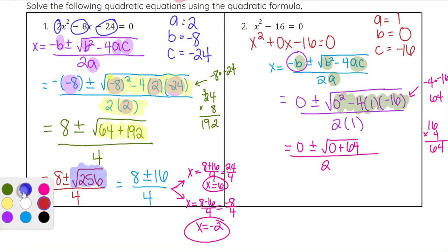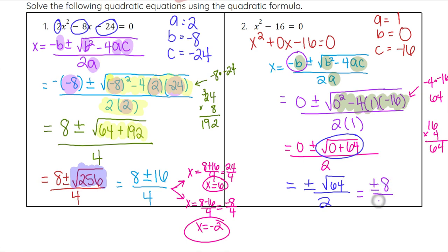Add 0 and 64 together to get 64 under the root. Since there's a 0 before the plus or minus, we can just write plus or minus the square root of 64 over 2. The square root of 64 is 8, so we have plus or minus 8 over 2.